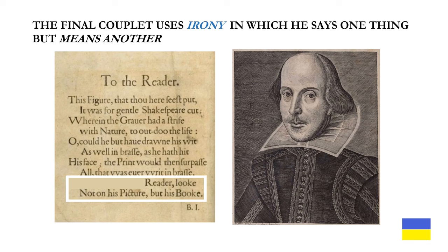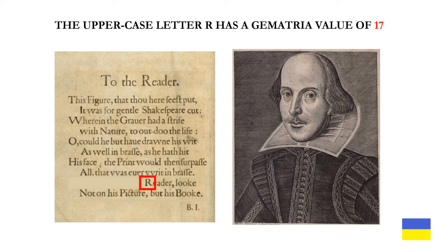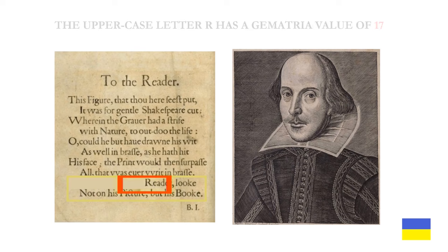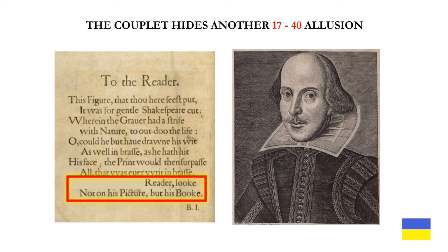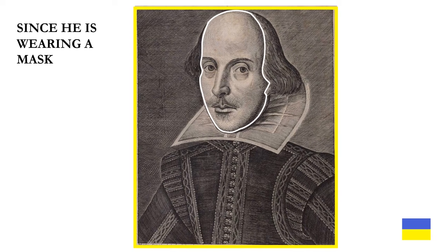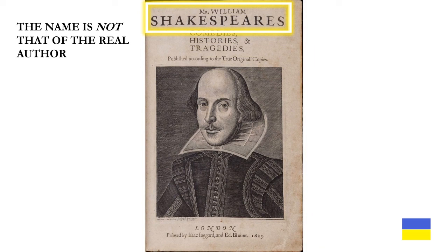Notice too that the uppercase letter R in the last section of the poem has a gematria value of 17, and there are 40 characters from the R to the end of the poem. Therefore, the couplet hides another 17-40 allusion. Since the figure is wearing a mask, the name is not that of the real author.